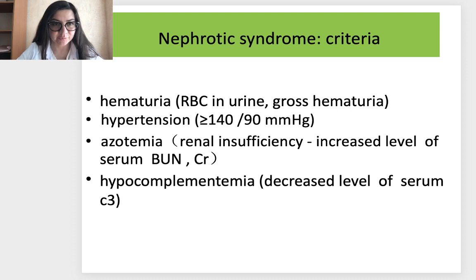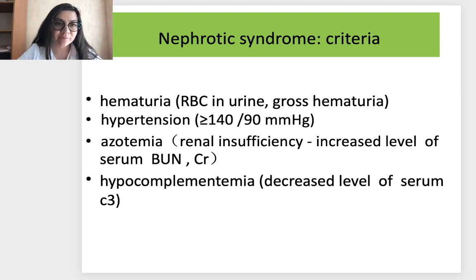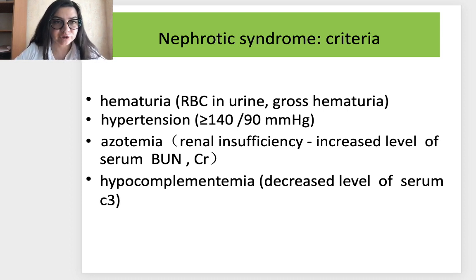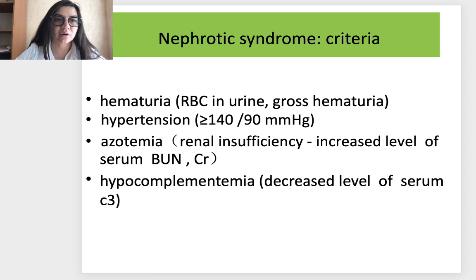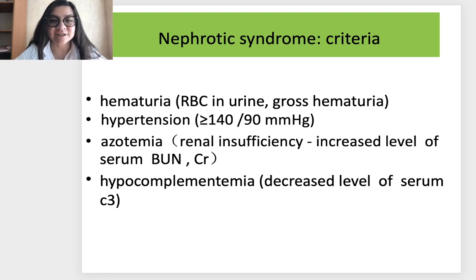The criteria of nephrotic syndrome include hematuria — red blood cells in urine, which can be gross hematuria — and hypertension, when blood pressure is higher than 140 systolic and higher than 90 diastolic. It can also include azotemia due to renal insufficiency, with increased levels of serum creatinine, and hypocomplementemia — a decreased level of the main complement component C3.